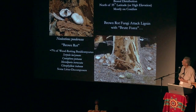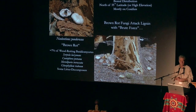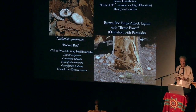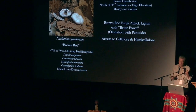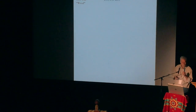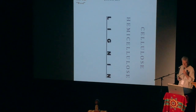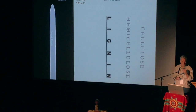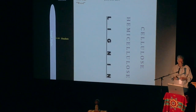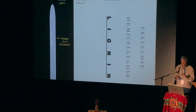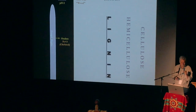Brown rots attack lignin with brute force. They oxidize the lignin with peroxides, and that gives them access to the food — to the cellulose and hemicellulose. They've got to get rid of that lignin first. So if this is the cell wall, and there's the lignin protecting the cellulose and hemicellulose, and here's the hypha coming in, it's going to secrete all kinds of enzymes. It's going to first start with oxalic acid, which is going to change the pH to 2. That's going to allow this oxalate to chelate — chelate means jaws — to chelate iron. It's going to pull iron out of solution in the ferric form, Fe3+.